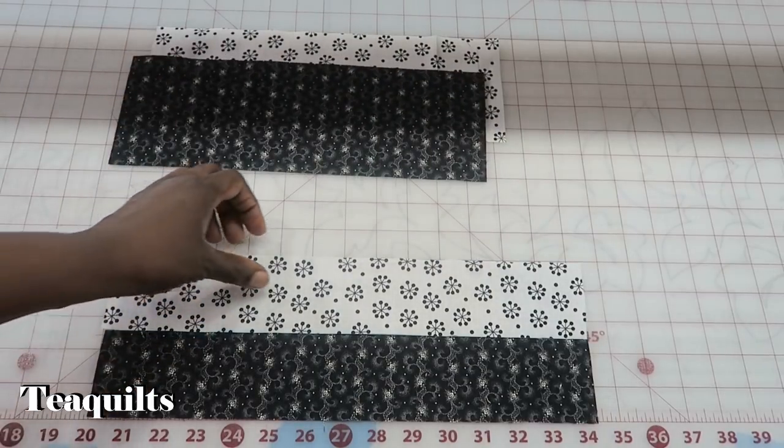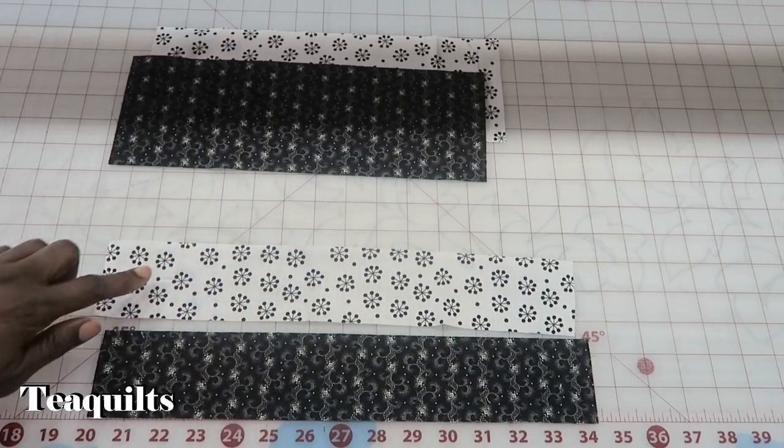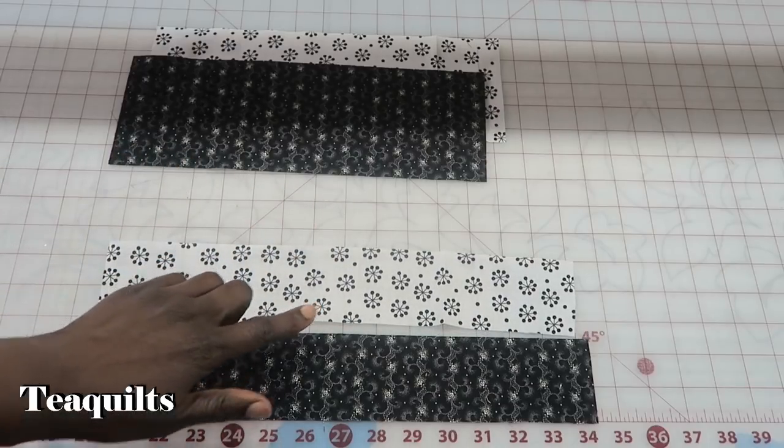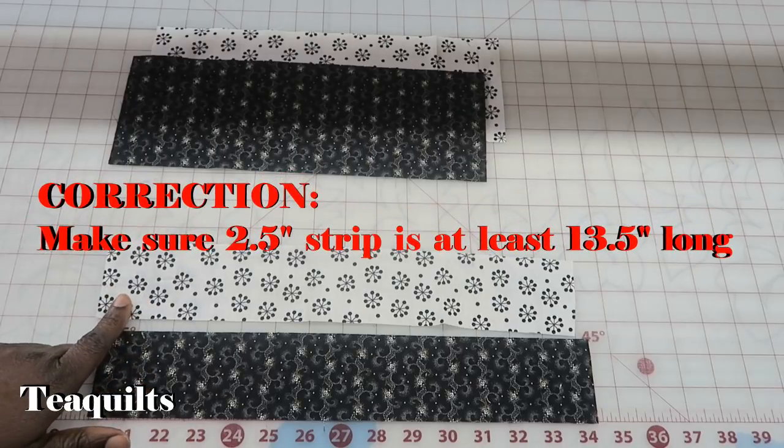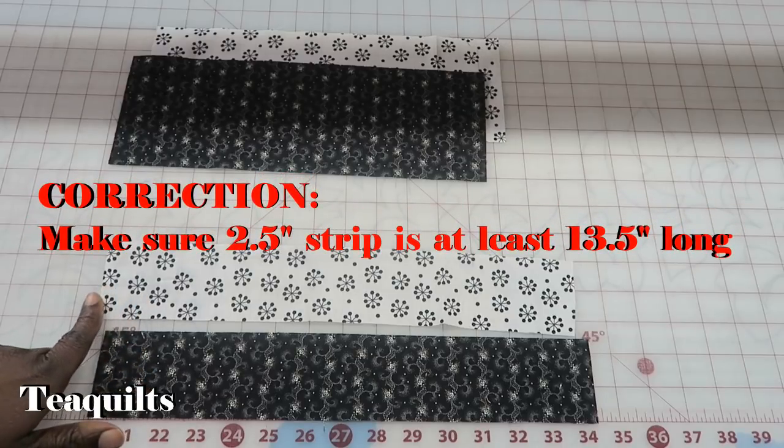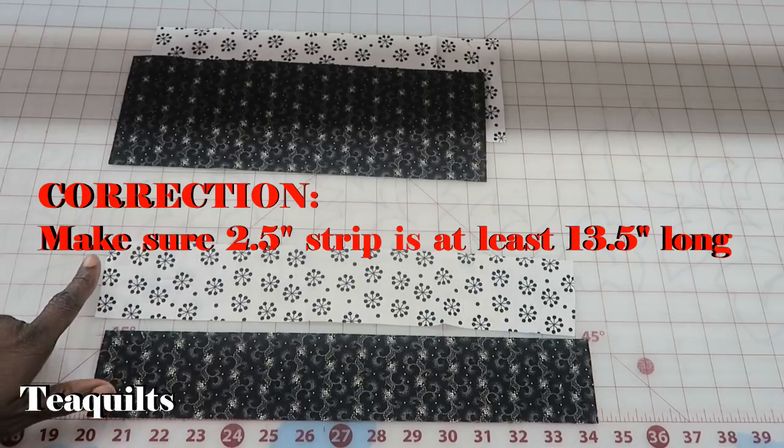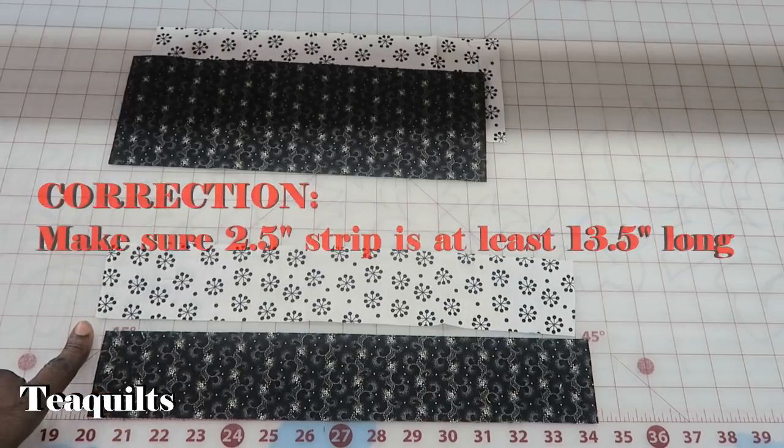For the other two pieces we need a strip that's cut two and one half inch wide from each piece and it needs to be at least 13 inches long. If you cut 13 inches long you'll have the exact amount that you need to make this block.